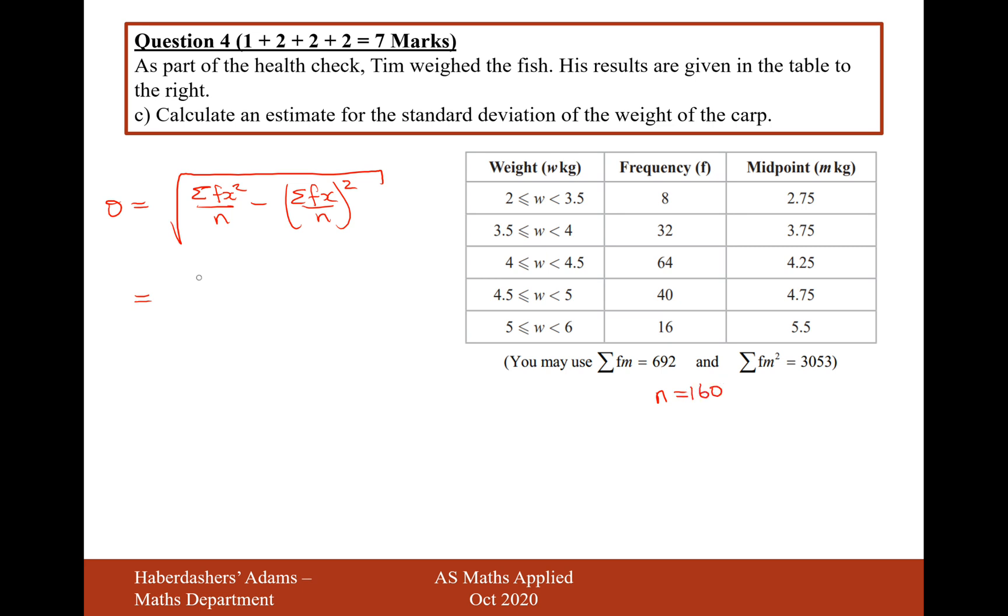And then let's type that all into the calculator then. So what we're going to type in, just write down in your notes what you're going to be typing in. 3053 divided by 160 minus 692 divided by 160 squared. And when you put all of that into the calculator, let's just type all of that in. 0.613. 0.613 is the answer to part C.